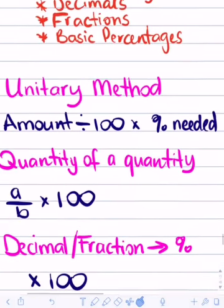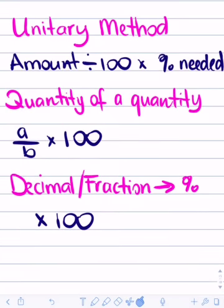Let's go into the three main methods we're going to be discussing. The first is the unitary method. If we're given a percent — for example, find 26% of 300 — the formula is: amount divided by 100, times by the percent needed. If we have $26 and that's 100%, dividing by 100 gives us 1%, and from 1% we can calculate any percentage required.